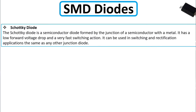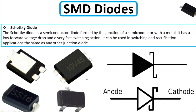The Schottky diode is a semiconductor diode formed by the junction of a semiconductor with a metal. It has a low forward voltage drop and a very fast switching action, and can be used in switching and rectification applications, the same as any other junction diode. There are many types of Schottky diode — you can find them with two terminals or three terminals. This is their symbol.